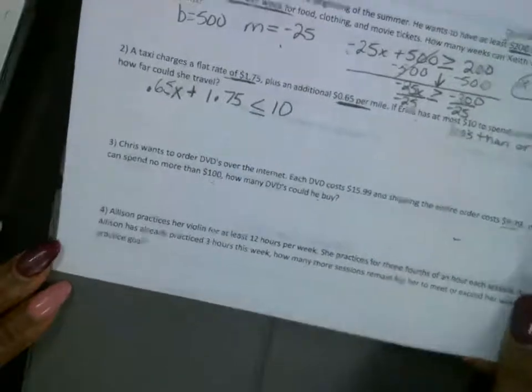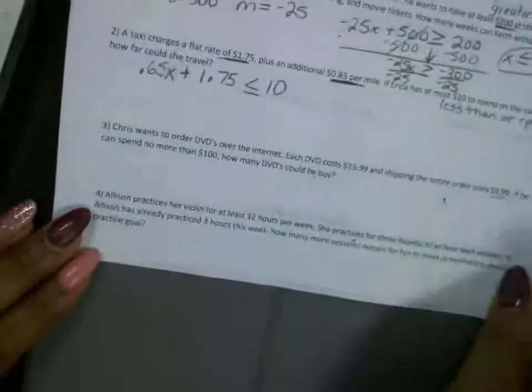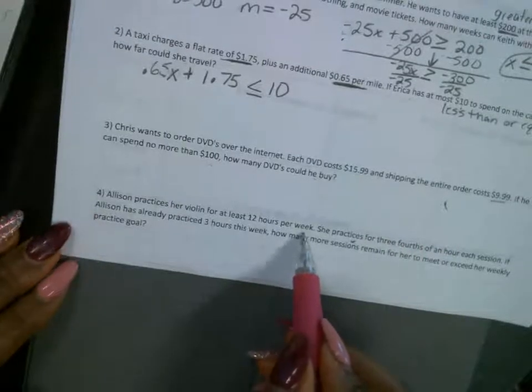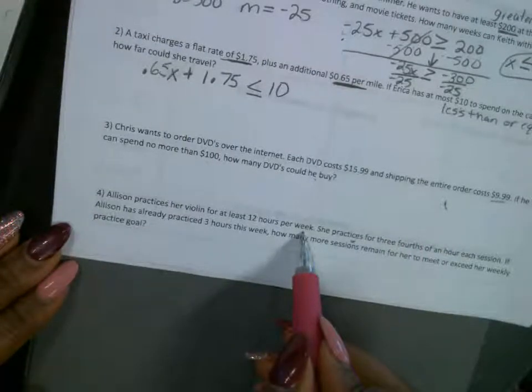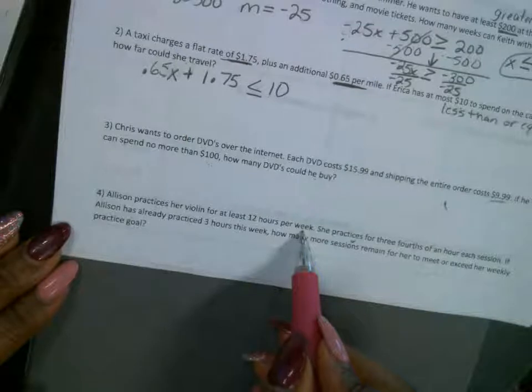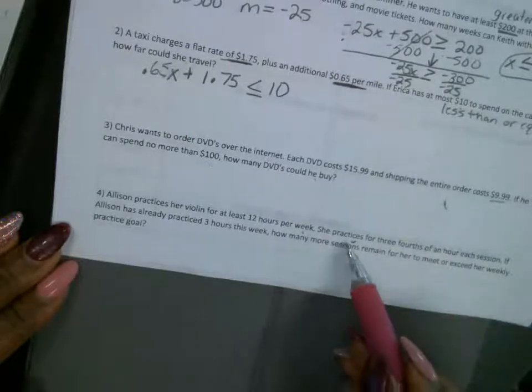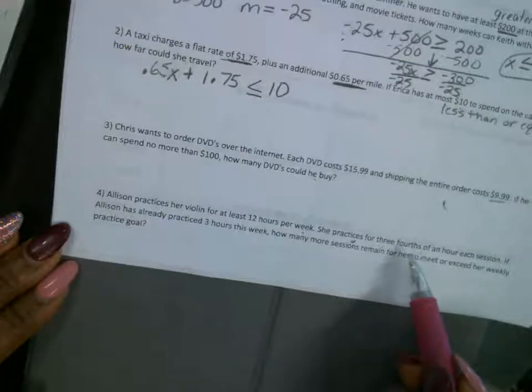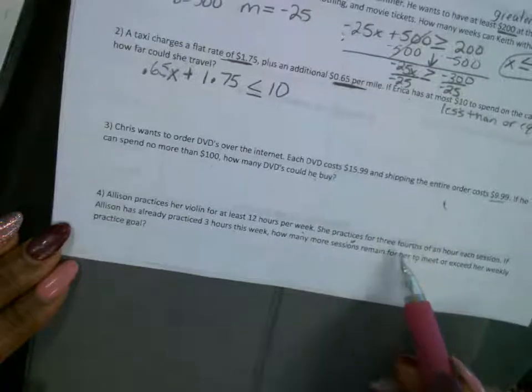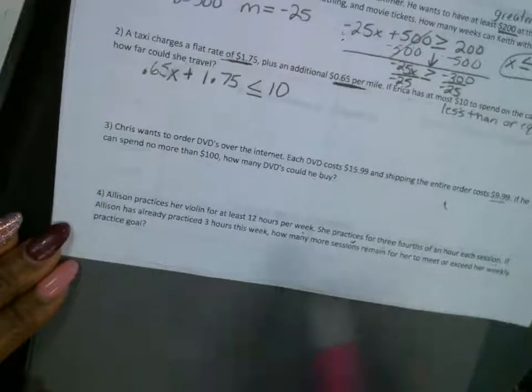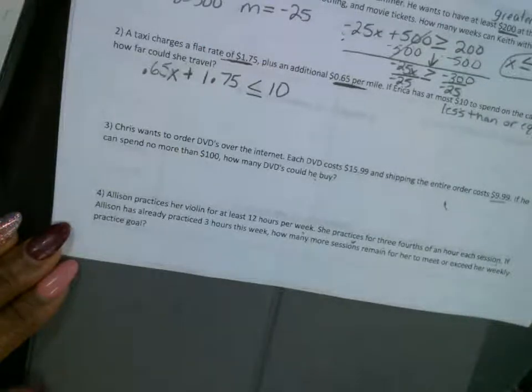Allison practices her violin at least 12 hours a week. So she practiced it for at least 12 hours a week. At least. So it's 12 or more, right? She practices for three-fourths, three over four, three-fourths of an hour each session. Every single session practices three-fourths of an hour.